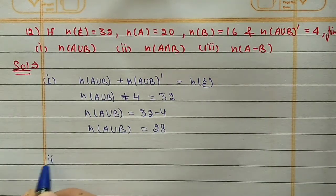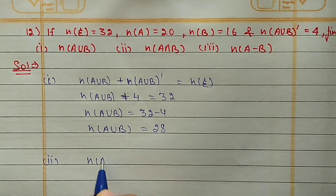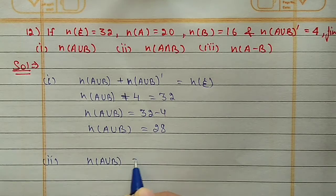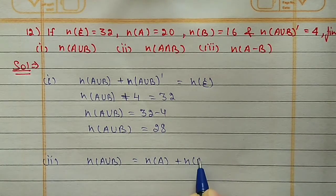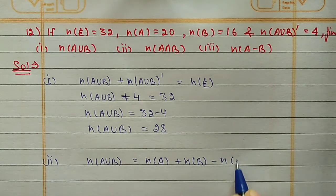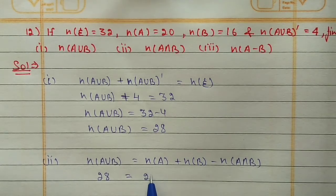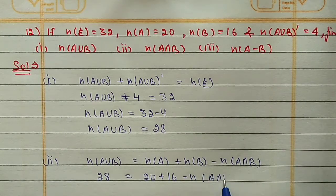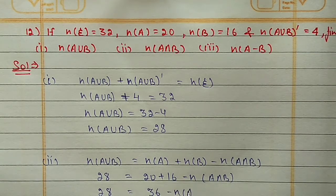For the second part, we find N(A∩B) using the first property: N(A∪B) = N(A) + N(B) - N(A∩B). N(A∪B) is 28, N(A) is 20, N(B) is 16. So 28 = 36 - N(A∩B).